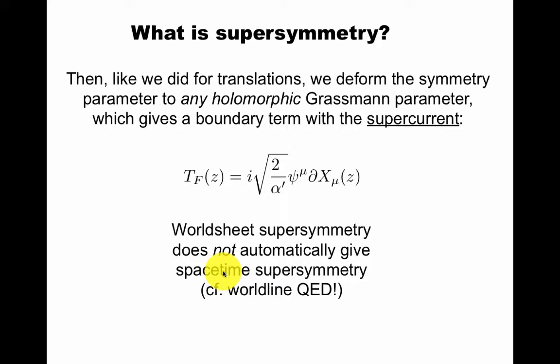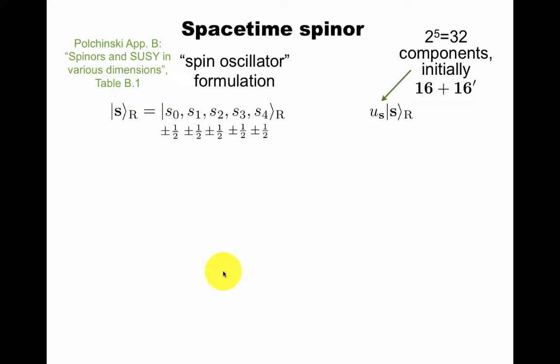Worldsheet supersymmetry does not automatically give spacetime supersymmetry. For sure it didn't in worldline QED. QED is not supersymmetric in spacetime, but just having this free theory of bosons and fermions on the worldsheet gave us worldline supersymmetry in that case. So let's understand what is actually the symmetry in string theory when you put super Polyakov instead of Polyakov.